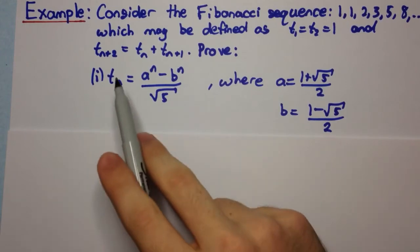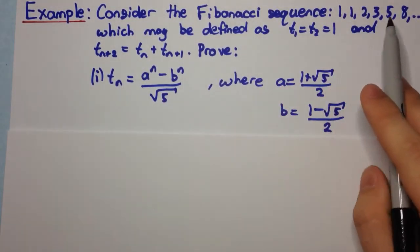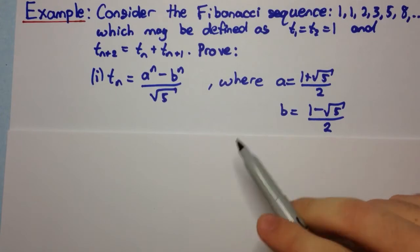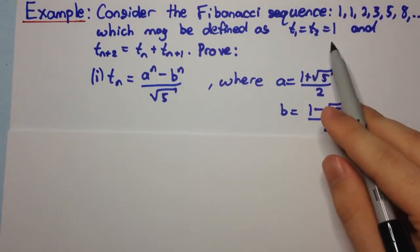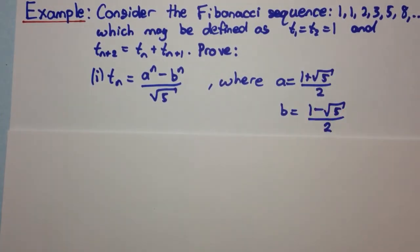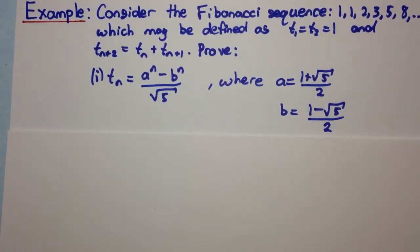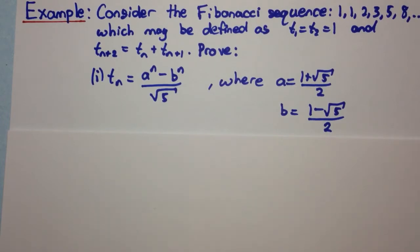So we'll have a look at the first part. Consider the Fibonacci sequence: 1, 1, 2, 3, 5, 8, and so on, which may be defined as t₁ equals t₂ equals 1, so the first two terms are 1, and t(n+2) equals tₙ plus t(n+1). This just means that each term is equal to the sum of the previous two terms.